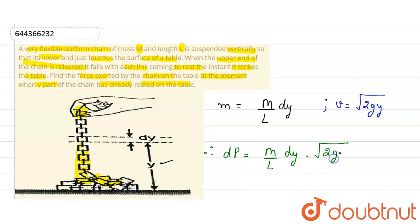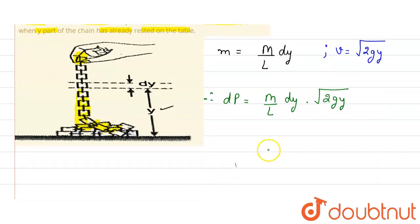We know that force equals dp/dt, which is the change in momentum with respect to time. If we differentiate (m/l) dy/dt times √(2gy), this dy/dt will become velocity.